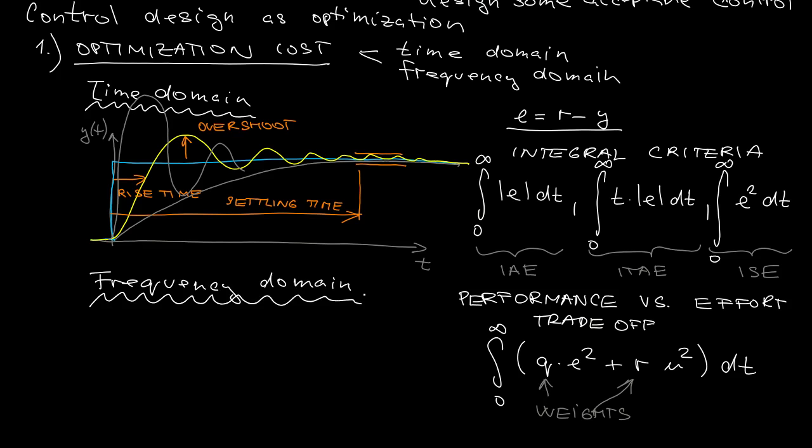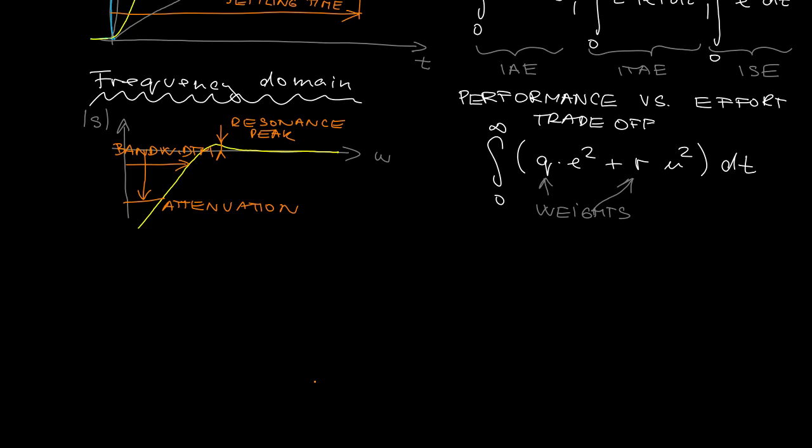In frequency domain, you can express your requirements by considering a sensitivity function, one of the closed loop transfer functions, in particular its amplitude frequency response. You can define the bandwidth that you'd like to maximize, the resonance peak to minimize, or make the attenuation at low frequencies largest. The same objection holds: these individual characteristics only cover one particular aspect.